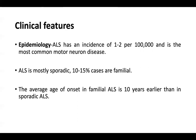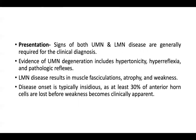Regarding epidemiology, ALS has an incidence of 1 to 2 per 100,000 and is the most common motor neuron disease. ALS is mostly sporadic; 10 to 15 percent of cases are familial. The average age of onset in familial ALS is 10 years earlier than in sporadic ALS.